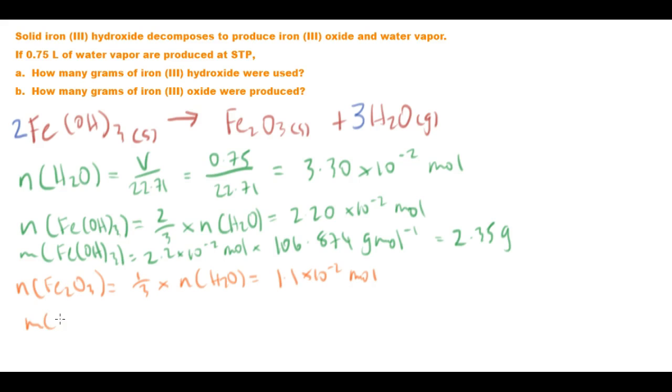So the mass of our Fe2O3 is going to be 1.1 times 10 to the negative 2 moles times the molar mass of Fe2O3 which is 159.7 grams per mole and that should give us about 1.76 grams, 1.76 grams to three significant figures. And there we go, solved.